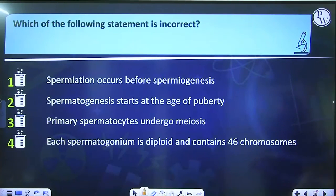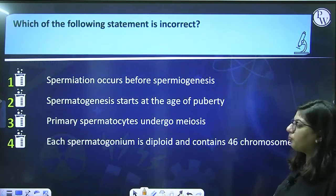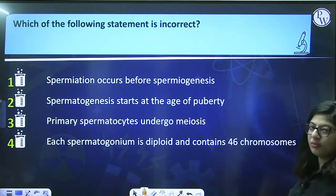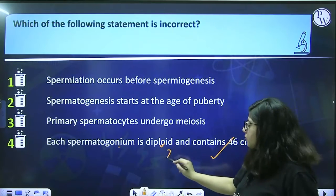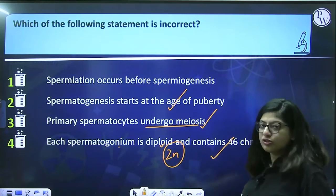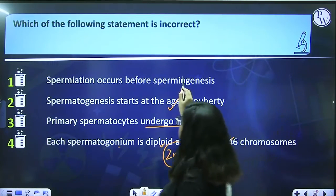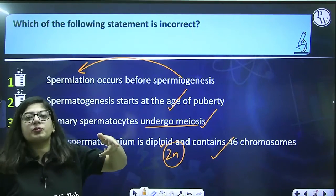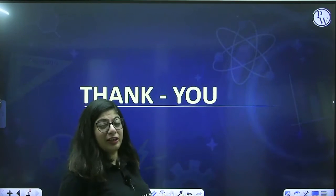Which statement is incorrect? 'Spermiation occurs before spermiogenesis' — this is incorrect. Spermiogenesis always occurs first (formation of sperm from spermatid), and then spermiation occurs (release of sperm from Sertoli cell). 'Spermatogenesis starts at puberty' — true. 'Primary spermatocyte undergoes meiosis' — true. 'Each spermatogonium is diploid and contains 46 chromosomes' — true.